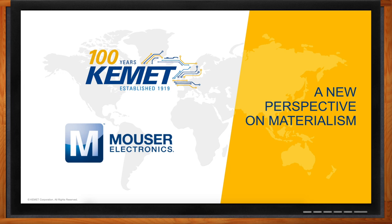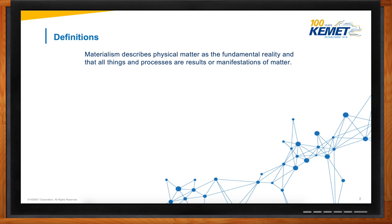The title here says 'A New Perspective on Materialism.' I thought we were here to talk about electronics — so how philosophical are we about to get? I think it must be from my past, when I was liking all these strange things happening in philosophy. So let's see what's happening with materialism. What is materialism? It describes the physical matter as the fundamental reality, and that all things and processes are results or manifestations of matter.